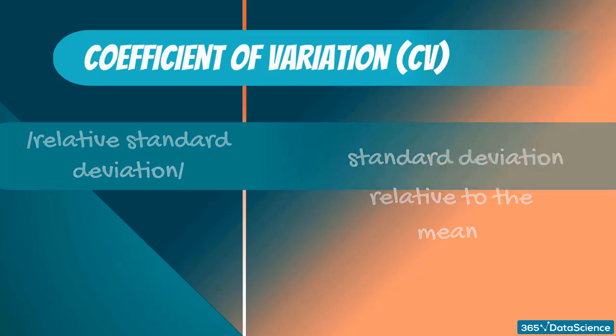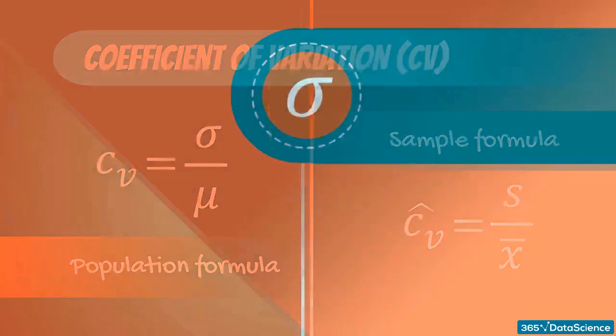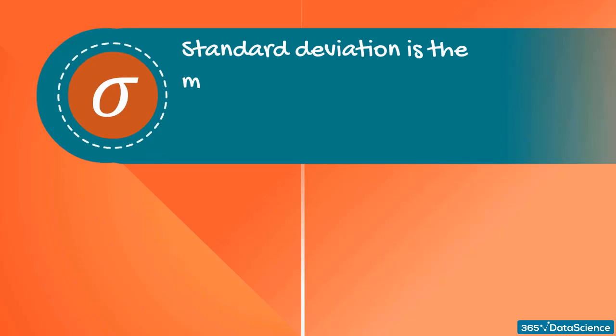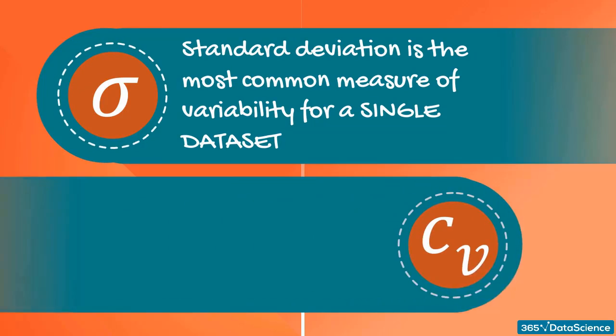As you probably guessed, there is a population and sample formula once again. So, standard deviation is the most common measure of variability for a single dataset. But why do we need yet another measure such as the coefficient of variation?